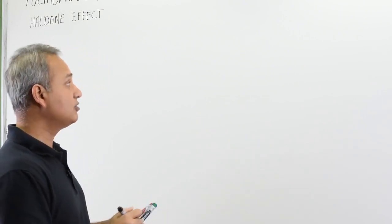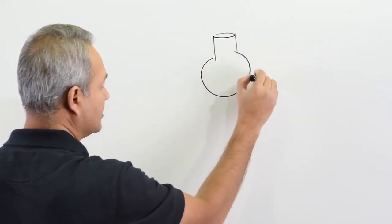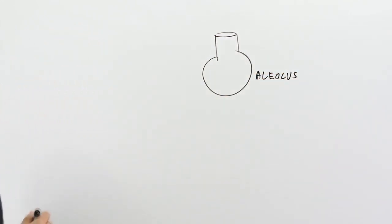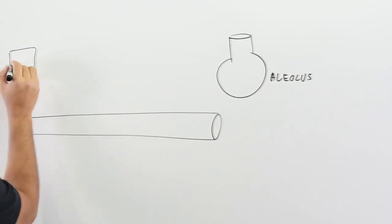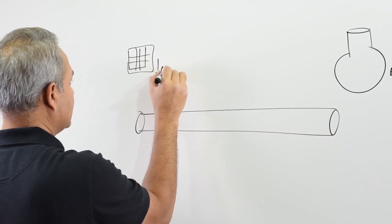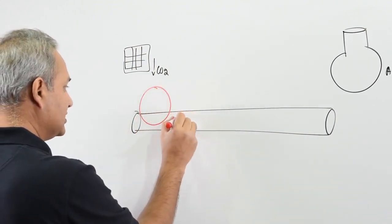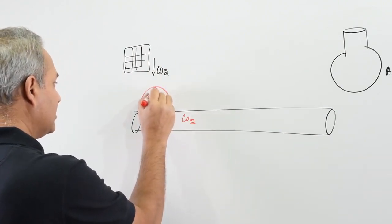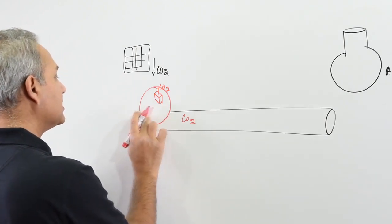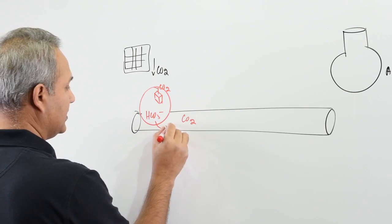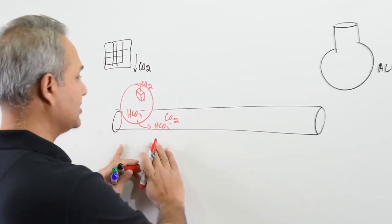The Haldane effect is a reverse of the Bohr effect. Here is an alveolus in the lungs, and here is a blood vessel. This blood vessel is going to a tissue. The tissue is making carbon dioxide that is coming out. We know that carbon dioxide comes in and loads — some is in dissolved form, some is attached to hemoglobin, and the majority of carbon dioxide becomes HCO₃ and moves in bicarbonate form to the lungs. Carbon dioxide is going to come from the tissue to the lungs.